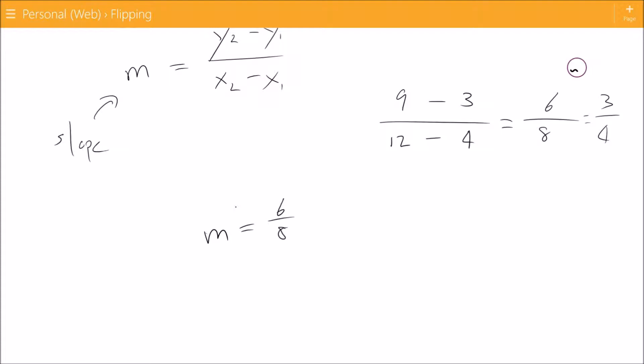So your final slope, you could say it's 6 over 8, or to be a little bit more tidy we can say it is 3 over 4. And that's it, you have found the slope for a line between two points.